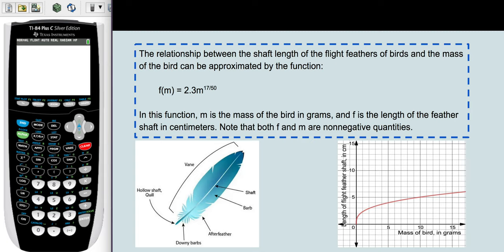If we go ahead and graph this function, then we do see that increased mass of bird will go with an increased feather shaft length.